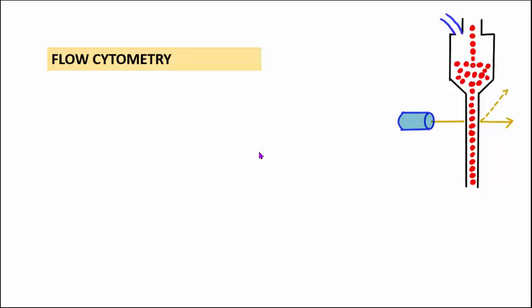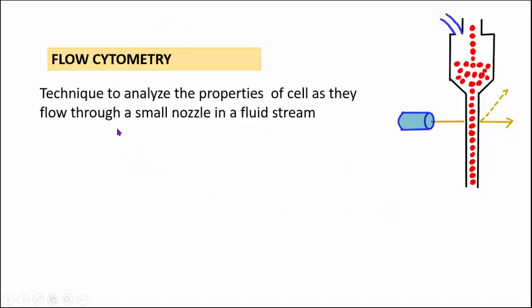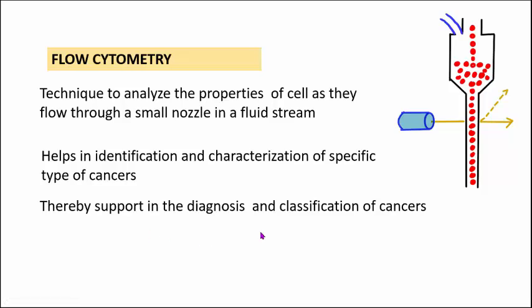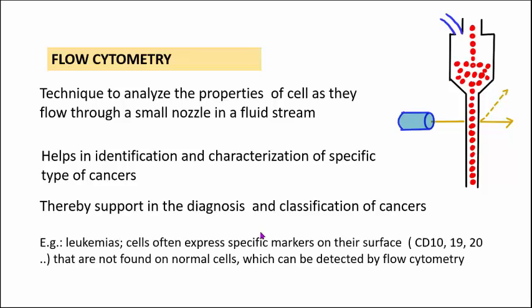The next important investigation is flow cytometry — a technique to analyze properties of individual cells as they pass through a small nozzle in a fluid stream. Light passing through the stream of cells scatters, and that information is used to diagnose various types of proteins. Flow cytometry helps in identification and characterization of specific types of cancers. For example, in leukemia, acute leukemia cells often express specific surface markers such as CD10, CD19, and CD20, which are not found in normal cells — these markers are detected by flow cytometry.